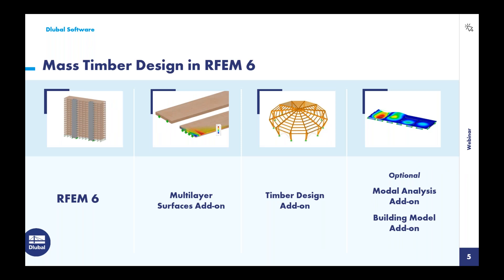For those not familiar with our program: RFEM 6 is the base software, allowing us to fully model the structure. All materials and cross-sections from available standards are included — not only for Canada and the United States but also other international standards. We can load the structure and get analysis results including internal forces and deflections. To model CLT panels with individually defined layers for a user-defined layup or to import CLT products from various manufacturers, we need the multi-layer surfaces add-on. The timber design add-on allows full design of timber members and CLT panels per the CSA standard. Optional add-ons include modal analysis and the building model add-on.